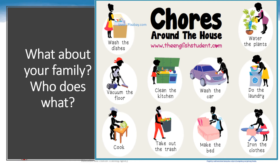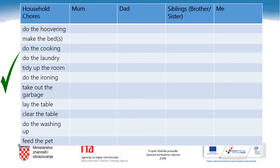And what about your family? Who does what in your family? Who washes the dishes? Which member of your family waters the plants? Who vacuums the floor? Do you clean the kitchen? Does your mom wash the car or not? Who does the laundry? Who cooks? Who takes out the garbage? Do you make the bed? Does your father iron the clothes? Please copy the chart with household chores and your family members in your notebooks, then think about your family members and decide who does what by putting a tick under the correct family member next to the corresponding household chore.